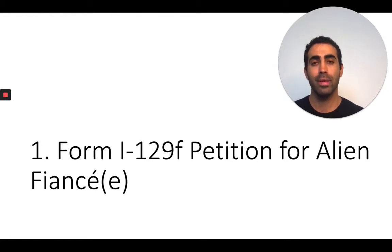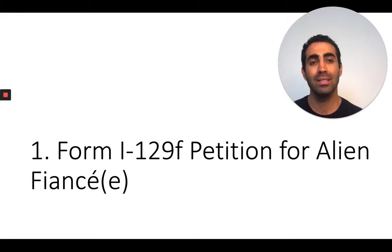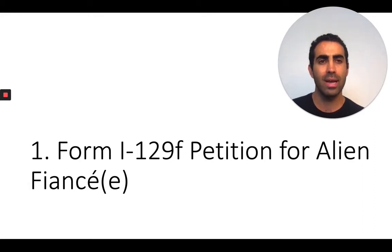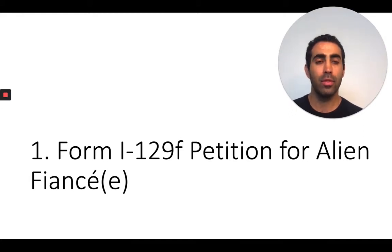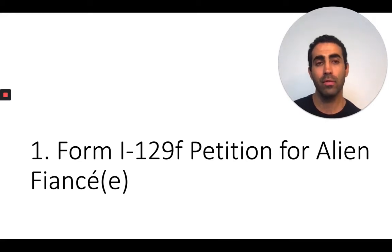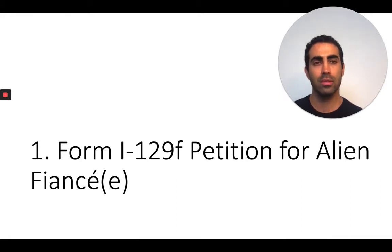The first form is the Form I-129F. This is called the Petition for Alien Fiancé. That's the first form that needs to get filed by the U.S. citizen, and it's filed with USCIS. When the U.S. citizen is submitting this form, they also include a lot of documents demonstrating that all the fiancé visa requirements are satisfied. For example, they will include evidence that the two have seen each other in person within the last two years, and a copy of their passport showing that they're a U.S. citizen.